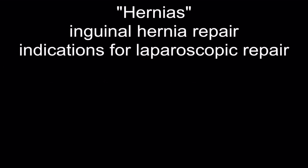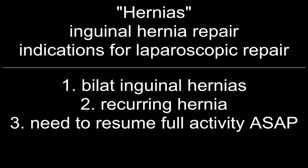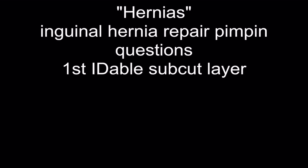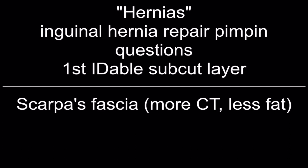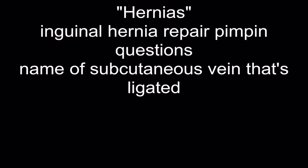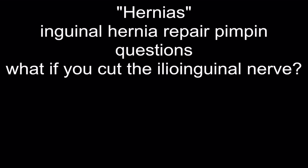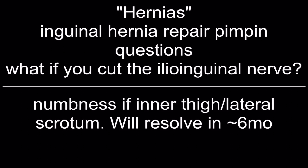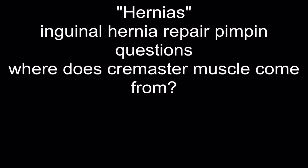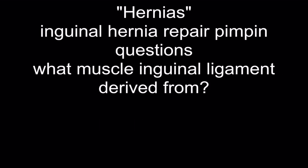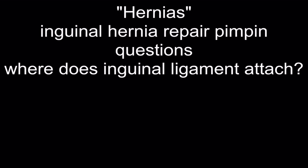Indications for laparoscopic repair: bilateral inguinal hernias, recurring hernia, need to resume full activity as soon as possible. First dabble subcutaneous layer: Scarpa's fascia. Subcutaneous vein ligated during inguinal hernia repair: superficial epigastric vein. If you cut the ilioinguinal nerve during repair: numbness of the inner thigh and lateral scrotum — resolves within six months. Cremaster muscle comes from the internal oblique. Inguinal ligament is derived from the external oblique aponeurosis.